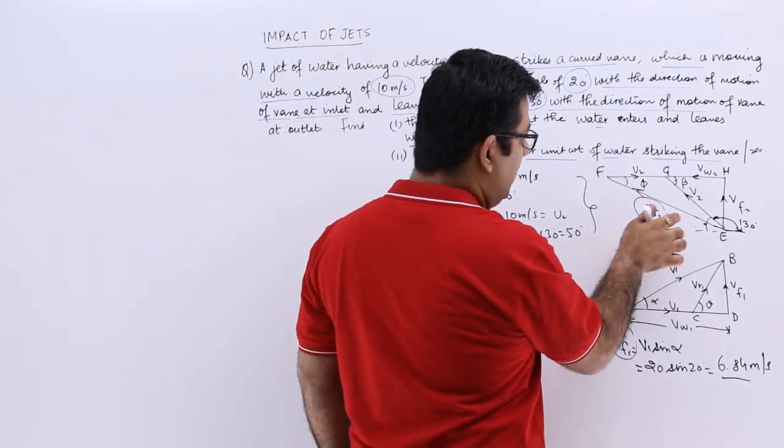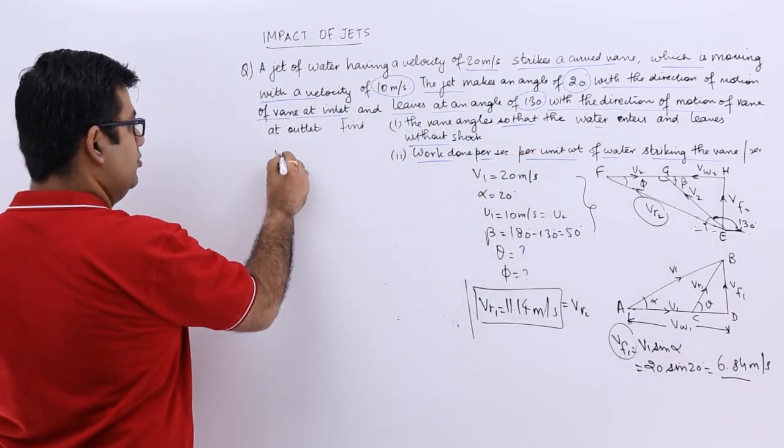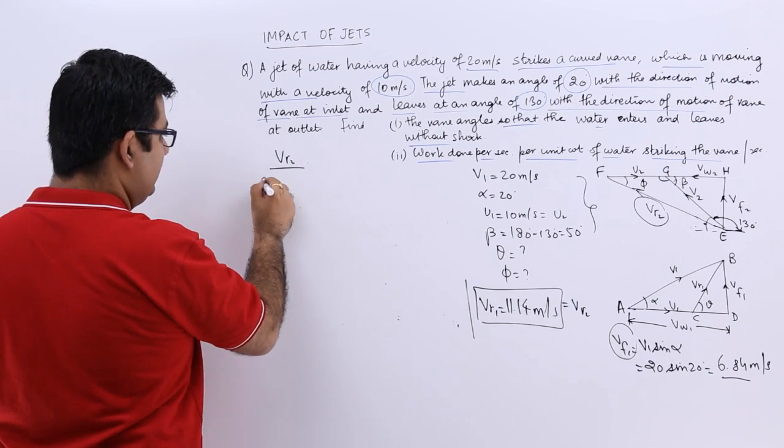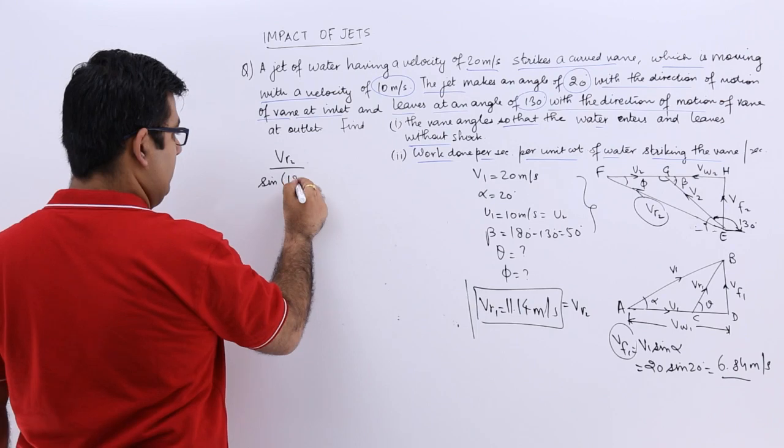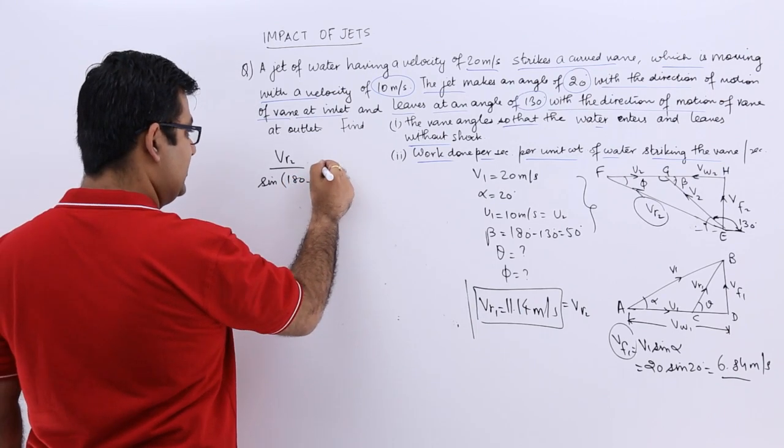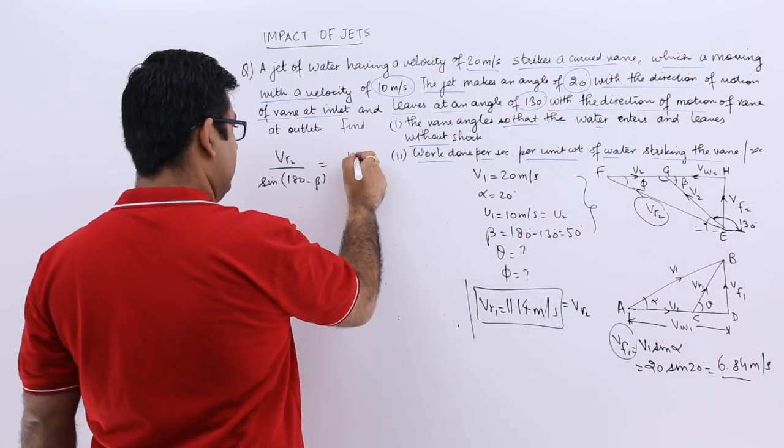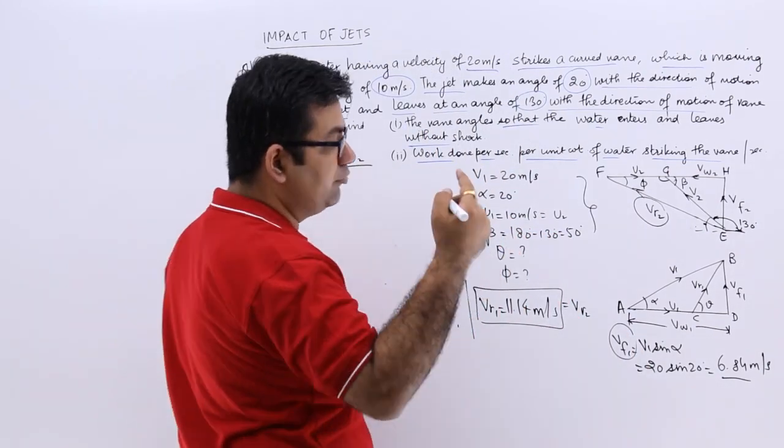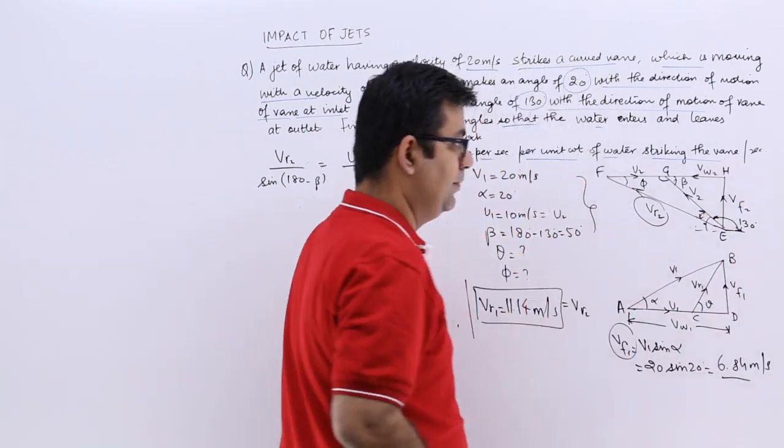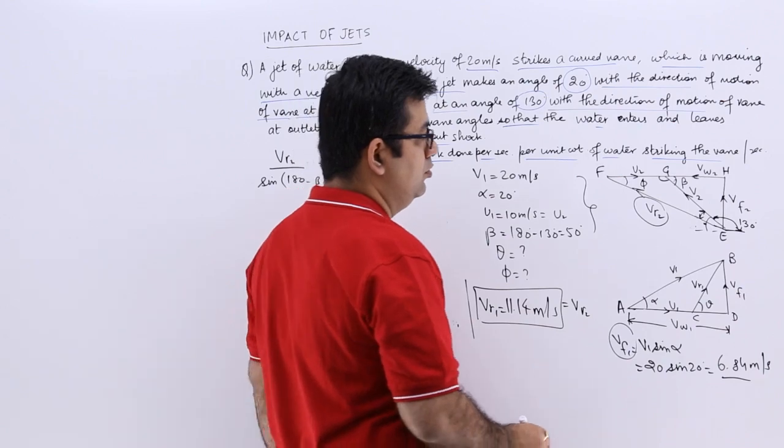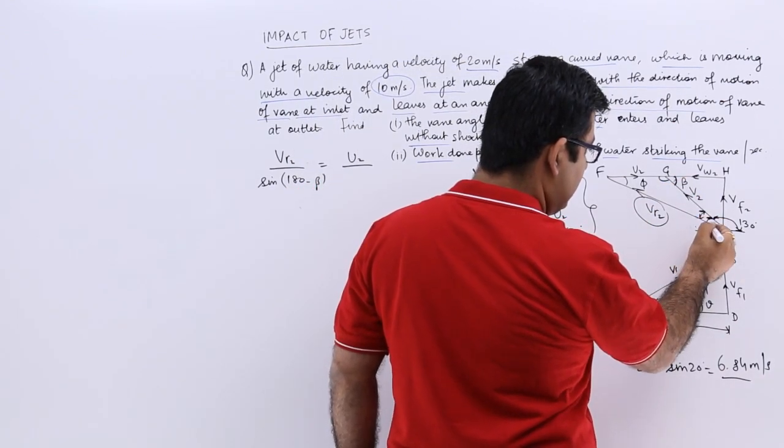From this triangle I can say that VF2 upon sine of this angle, so VF2 upon sine of 180 minus beta, is equal to, if I take U2 as the velocity vector upon the sine of the opposite angle. So this is the angle I want to have. Now this angle is equal to, if you look at this angle, this entire angle from this line to this line is beta.